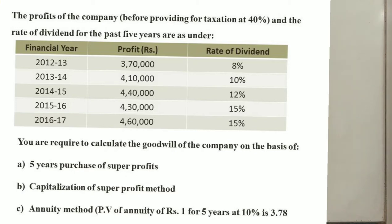You are required to calculate goodwill of the company on the basis of: (1) 5 years purchase of super profits, (2) capitalization of super profit method, and (3) annuity method — where PV annuity of Re. 1 for 5 years at 10% is 3.78.